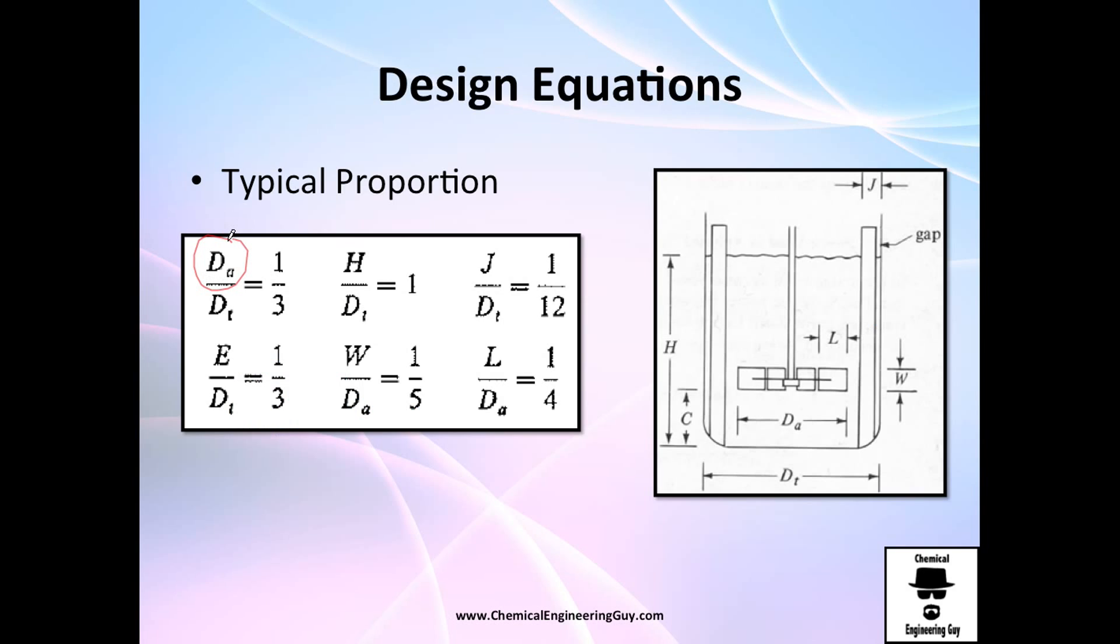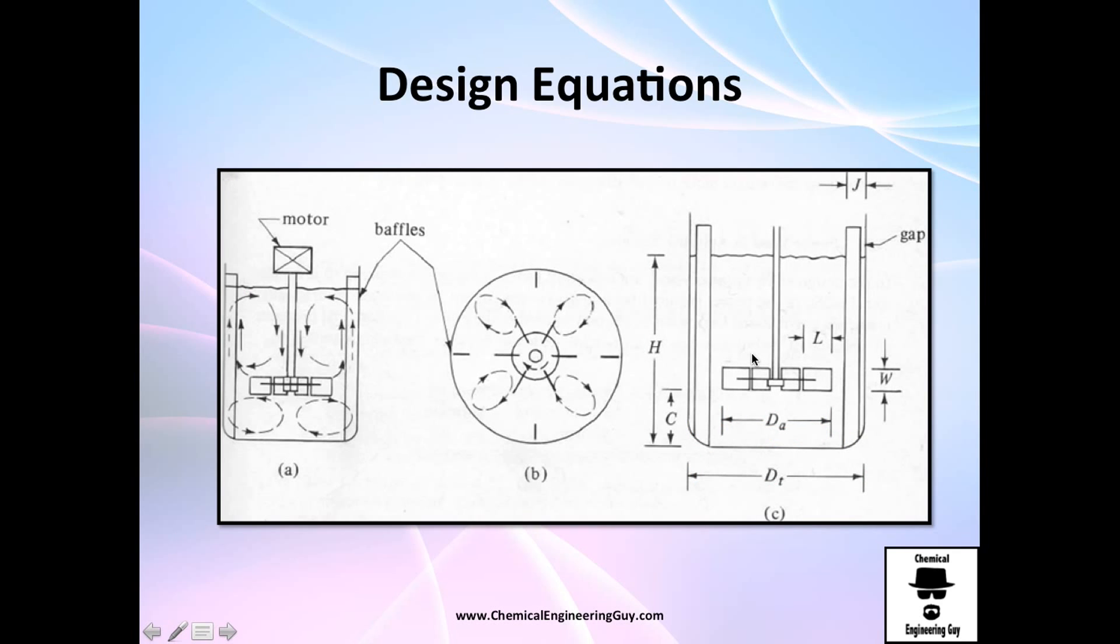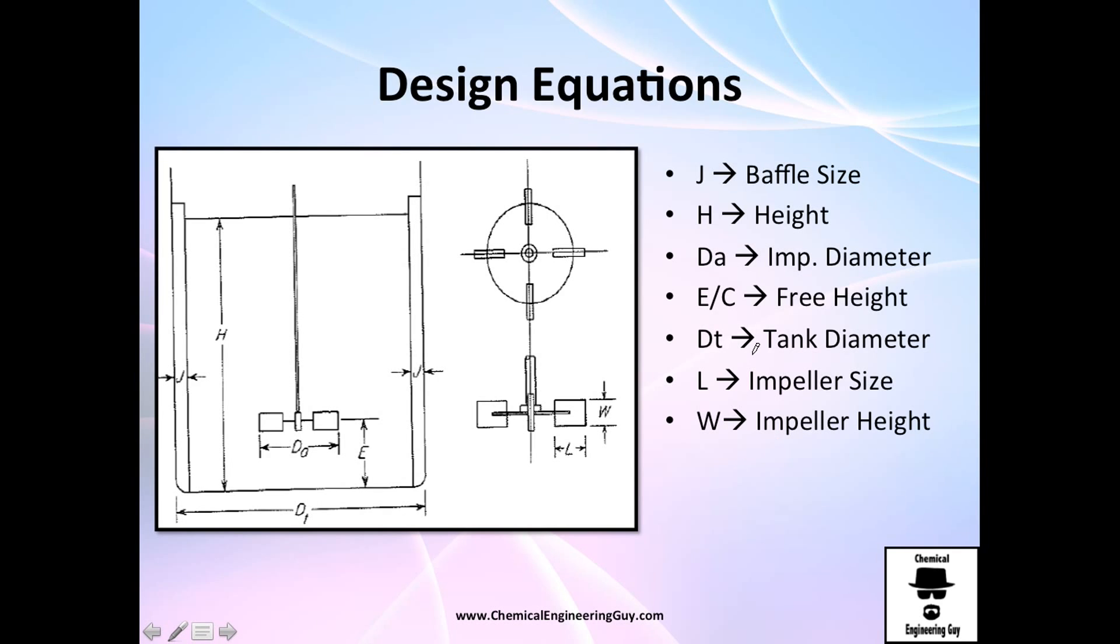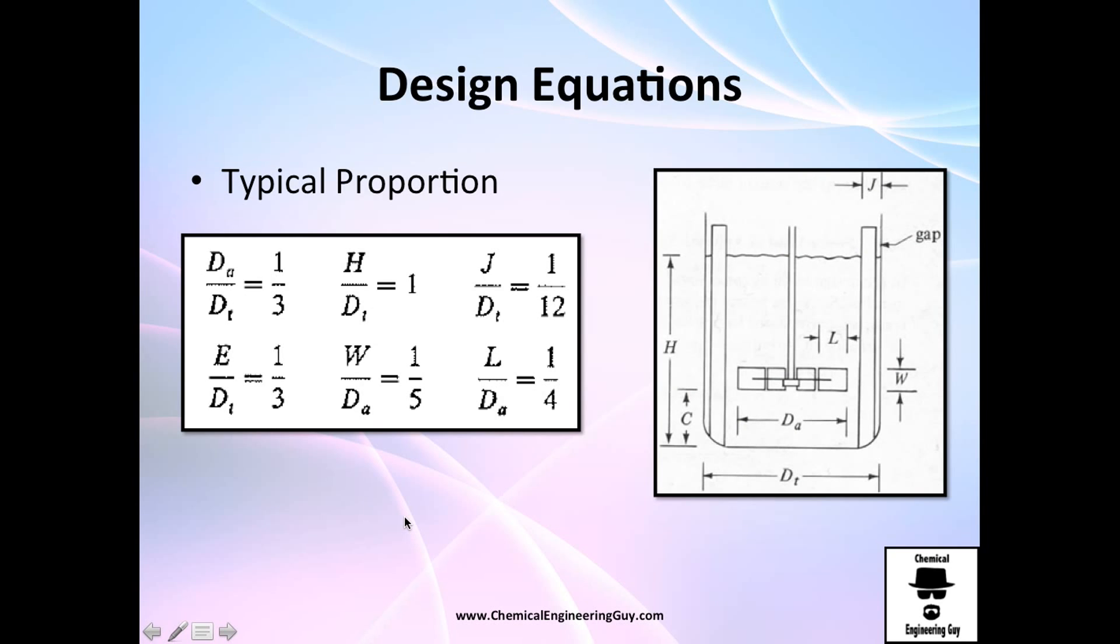The diameter of the impeller, this one right here, divided by the total diameter should be about one third. So we have one third, one third, and one third. Typical ratio. E divided by Dt, the height between the propeller and the bottom divided by the diameter of tank, also must be one third.